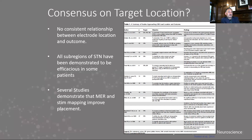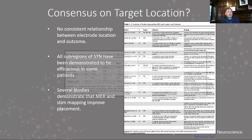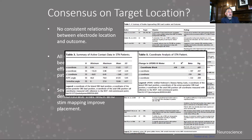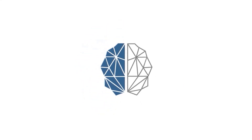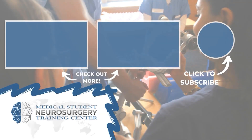MER has been demonstrated in many studies to improve mapping and placement. One study shows essentially that there was greater efficacy — with no relationship between where the electrode is — when microelectrode recording is used. This plot shows a greater improvement in the UPDRS score with microelectrode recording than without.